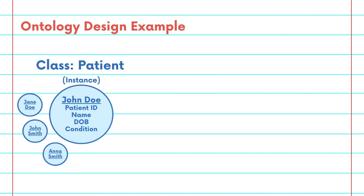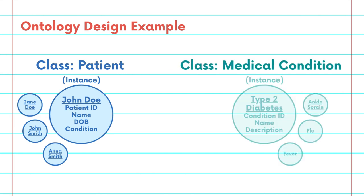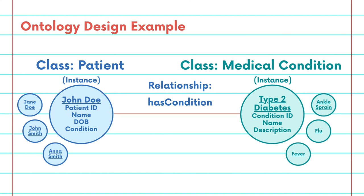Within the class medical condition, there is an instance of type 2 diabetes with properties such as condition ID, name, and description. John Doe has been diagnosed with type 2 diabetes. This means for the instance of John Doe, there is a property has condition of type 2 diabetes. The has condition property links an instance of the patient class, John Doe, to an instance of the medical condition class, type 2 diabetes. This relationship helps in organizing and retrieving patient records and their associated medical conditions effectively within the ontology.